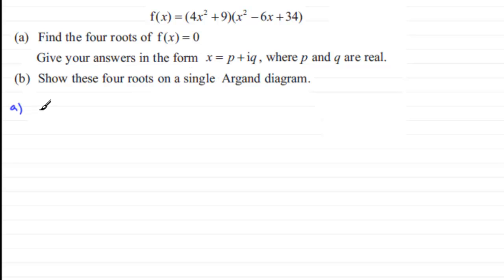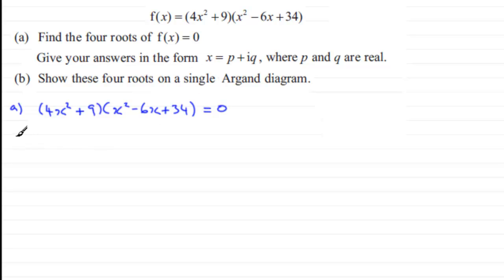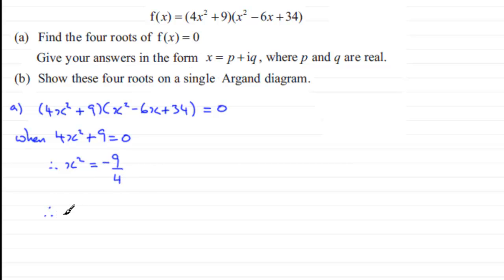The equation is (4x² + 9)(x² - 6x + 34) = 0. Either the first factor or the second must equal zero. When 4x² + 9 = 0, subtracting nine and dividing by four gives x² = -9/4. Taking the square root of both sides, x = ±(3/2)i, since the square root of minus one is i. That's our first pair of solutions.